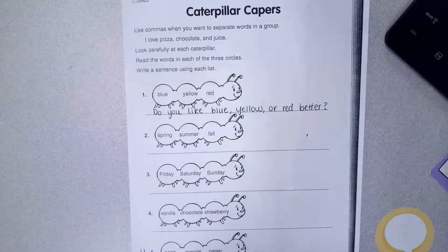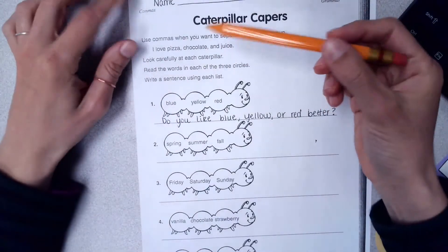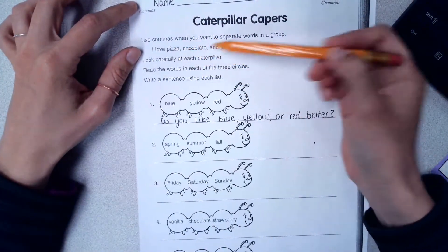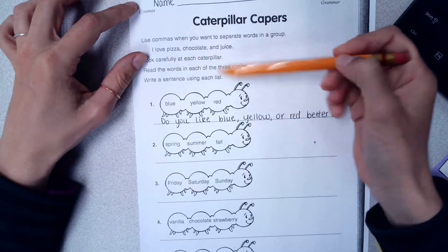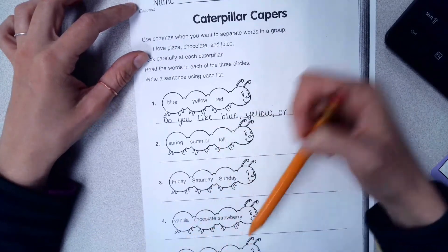Alright, now go grab Caterpillar Capers from the front of the room. On this page it says you're going to use commas when you separate the words in a group. I love pizza, chocolate, and juice. You're going to look carefully at each caterpillar, read the words in each of the circles, and then write a sentence using the list.